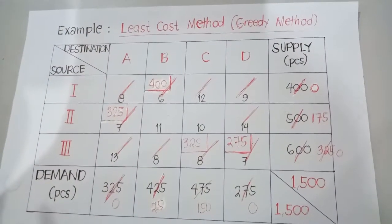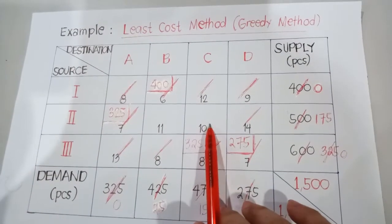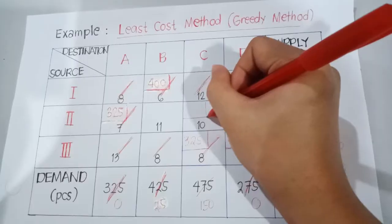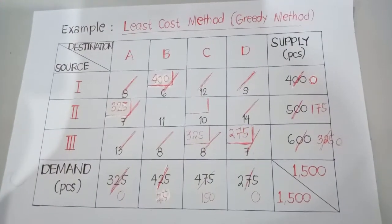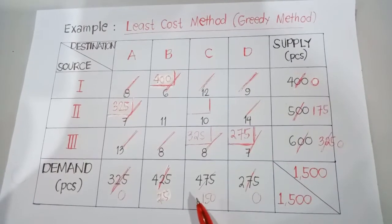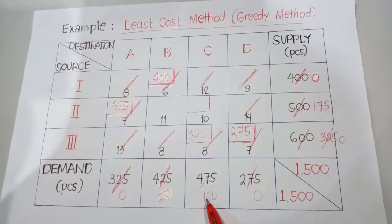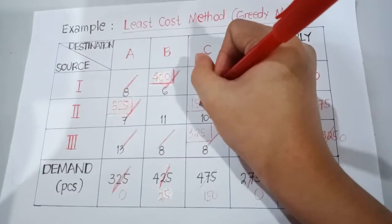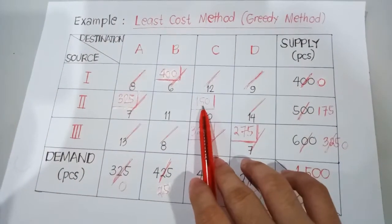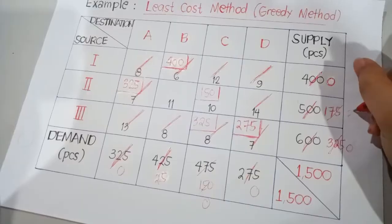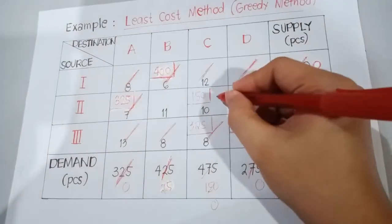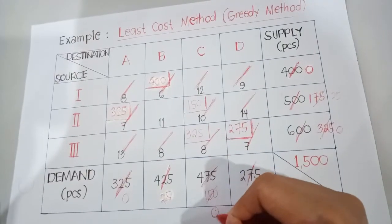We are now left with two cells: cell 11 and cell 10. Since 10 has the least value, we do our next allocation there. The supply is 175 and the demand is 150. We use 150 since it has the least value. So 150 minus 150 becomes 0, and 175 minus 150 becomes 25. Since the demand is exhausted, we cancel out that entire row.